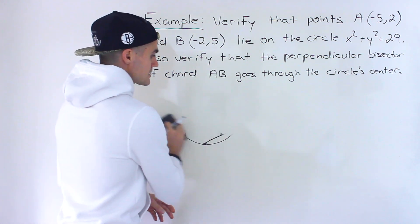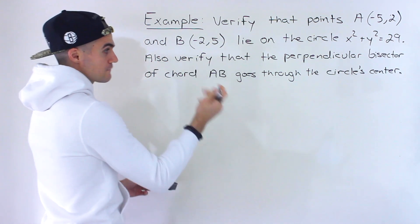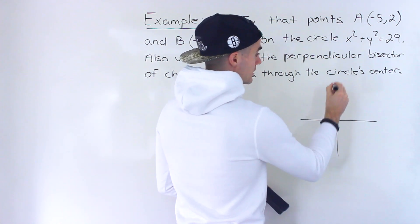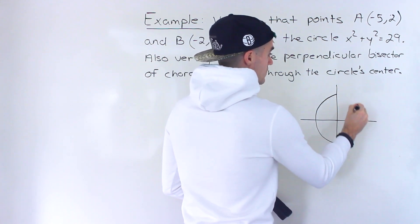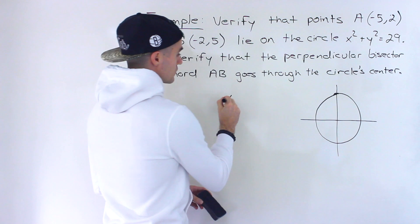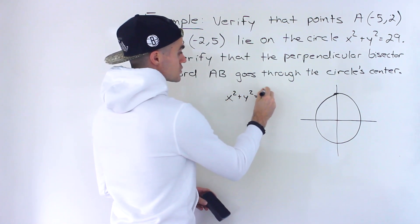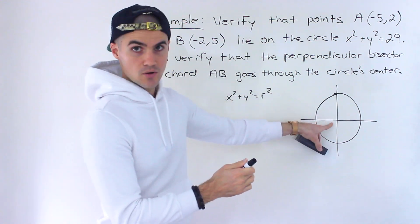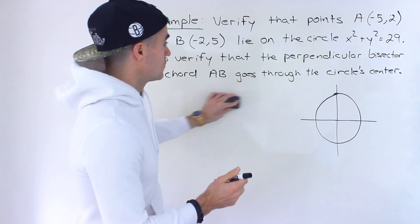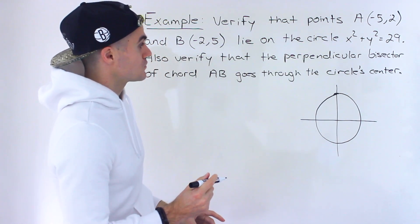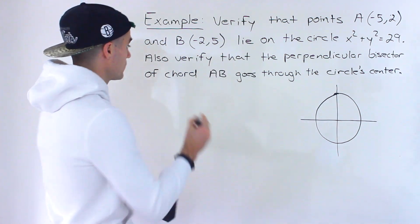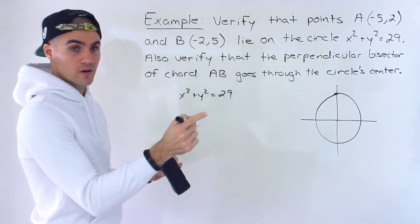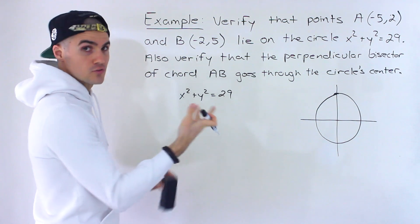Let's first graph this circle. We have x squared plus y squared equals 29. The center is at 0, 0 — whenever the circle is in the form x squared plus y squared equals r squared, the center is always at 0, 0. Now let's verify that these points are on the circle by plugging in the x and y values and making sure the left side equals the right side.